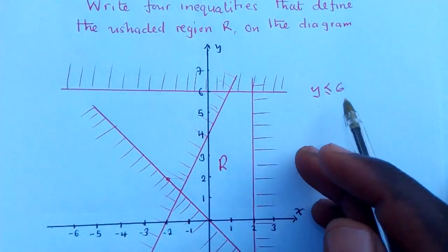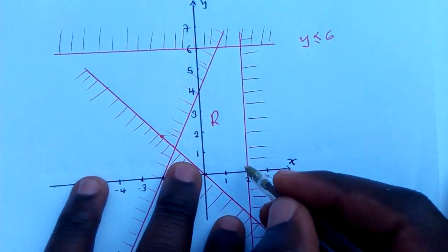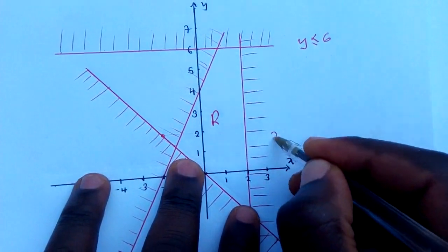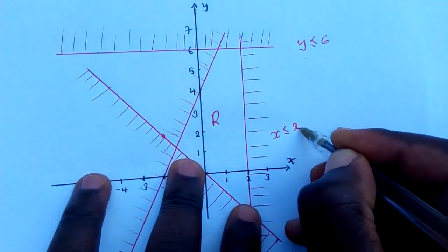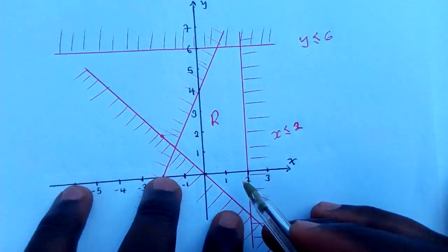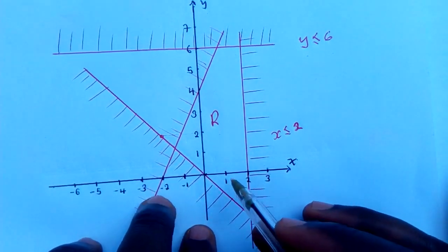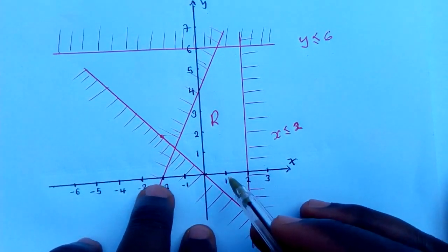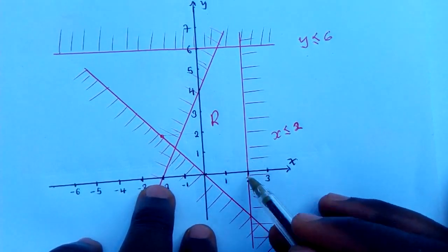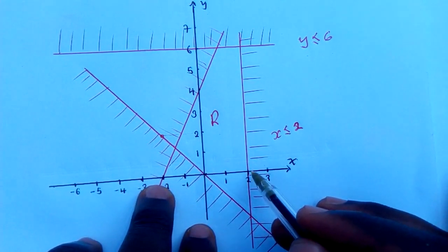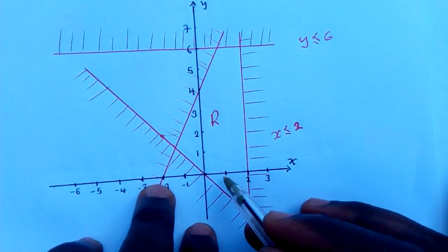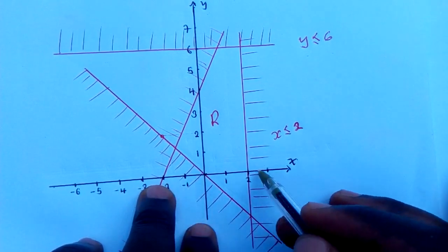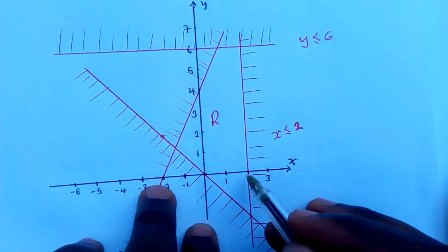We go to the next one: x is less than or equal to 2. We can see it's cutting at 2, and then we get the side which is not shaded. The unshaded side is less, so x is less than or equal to 2.